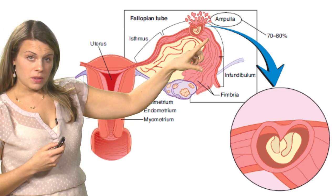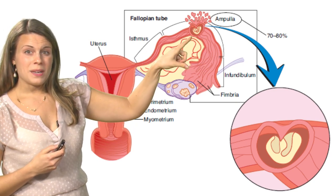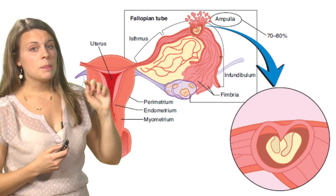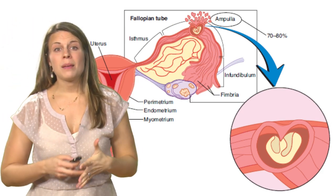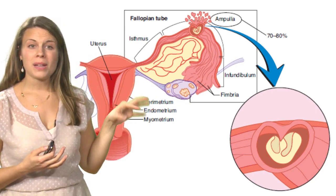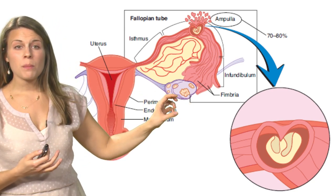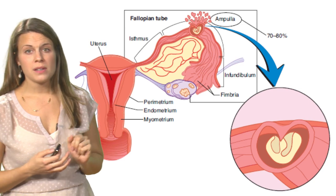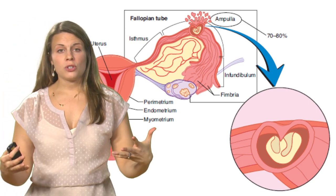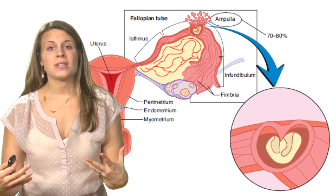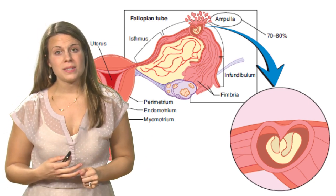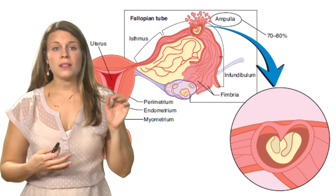Once the ectopic pregnancy implants in the tube, it is at risk of bursting open, as pictured here. Keep in mind that an ectopic pregnancy can implant anywhere outside the uterus — on the ovary, in the peritoneum, or even on the serosal surface of the uterus. It's a broad definition, but the vast majority of the time it will occur within the fallopian tube.